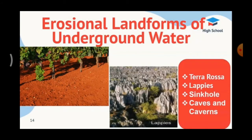Lapies: when the joints of limestone rocks are corrugated, long furrows are formed and these are called lapies. Corrugated means tight ridges and valleys. When the joints of limestone rocks are shaped into tight ridges with valleys by groundwater, long narrow furrows (trenches) are formed.